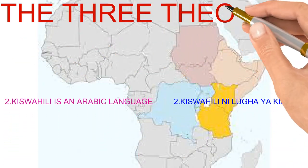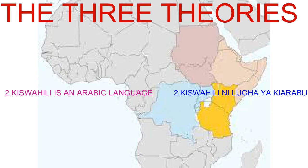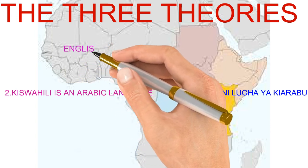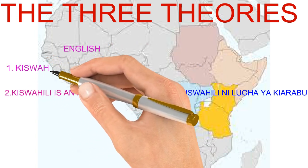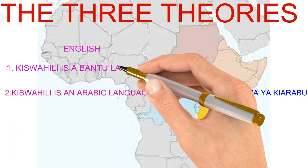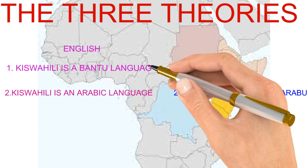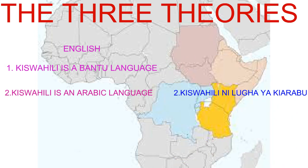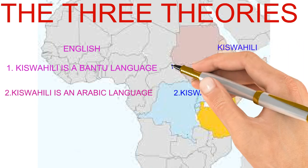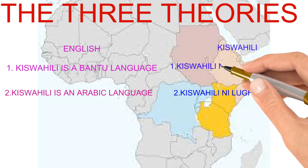Nadharia tatu kusema kwamba: ya kwanza inasema lugha Kiswahili ni lugha ya Kibantu; nadharia pili inasema kwamba lugha Kiswahili ni lugha ya Kiarabu; na nadharia tatu inasema kwamba lugha Kiswahili ni lugha yenye mchanganyiko wa maneno kutoka lugha mbalimbali na lugha za Kibantu. Katika video ijayo tutaweza kuangalia nadharia hizi tatu na tutaweza kuzizungumzia.